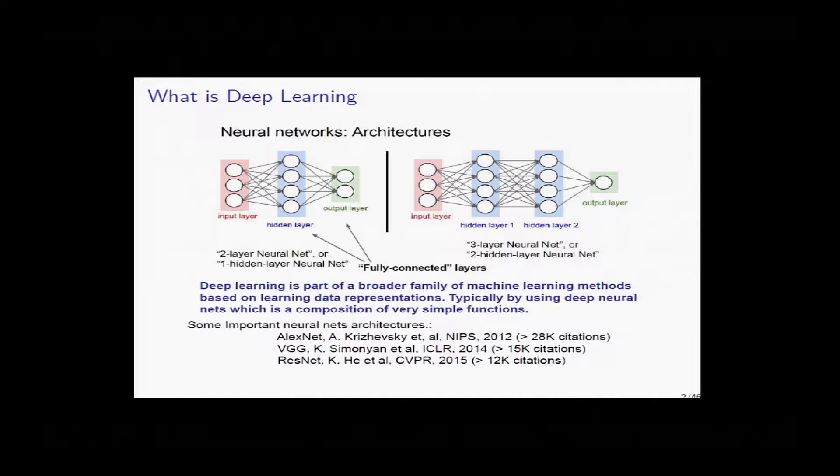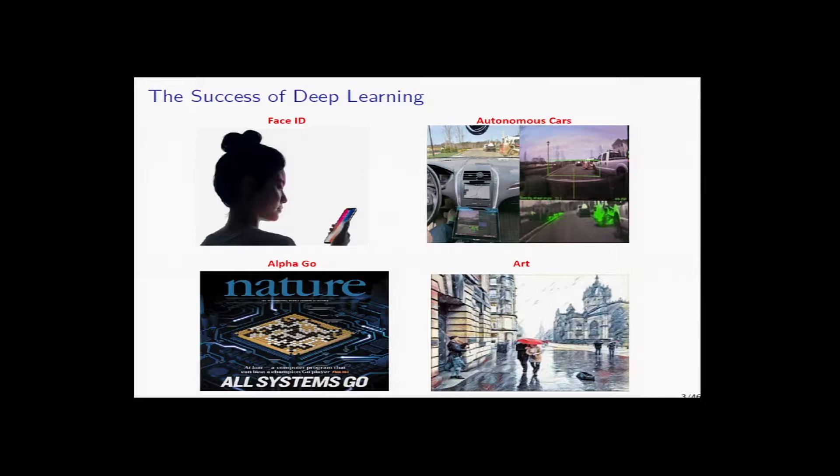This is propaganda - the success of deep learning: facial ID, autonomous cars, AlphaGo, art, and so on. As was shown yesterday, the results in computer vision were revolutionary. The subject has changed amazingly in a very short time since 2012 roughly. There was a winter of deep learning in Montreal, which is a good place for a winter, and that's where a lot of great stuff was incubating.